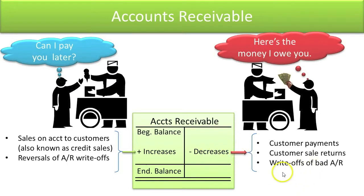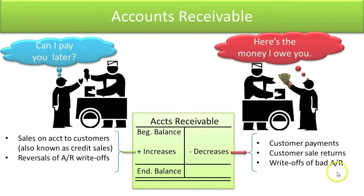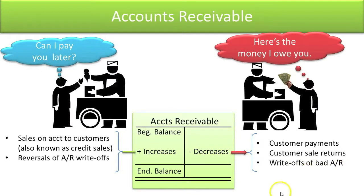Sometimes customers simply don't pay. And in that case, when you've concluded that this customer will not pay because they've gone bankrupt, you would write off your bad accounts receivables. That will cause this asset called receivable to go down. It's no longer an asset because there is no future benefit — they're not paying.